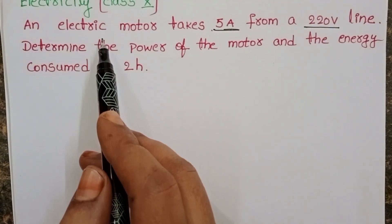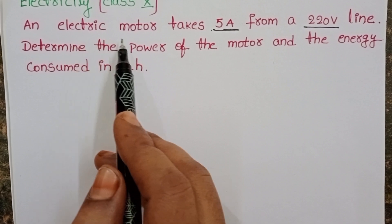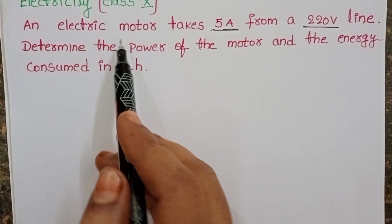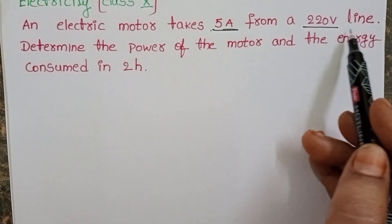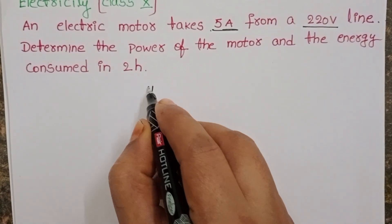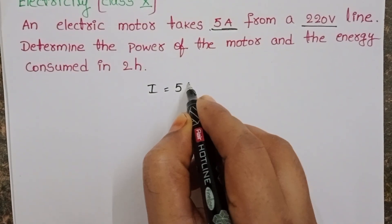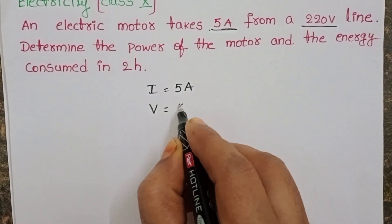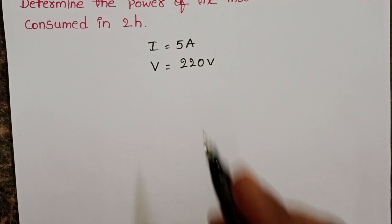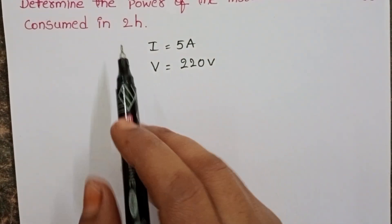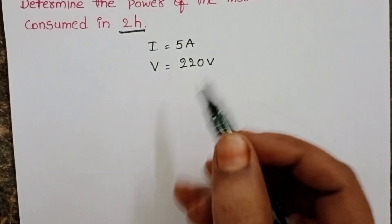In this question, the given electric device is electric motor. This electric motor draws 5 amperes of current from the 220 volt line. I is equals to 5 amperes and the potential difference is 220 volt. By using this, we have to find the power and also energy consumed in 2 hours time.